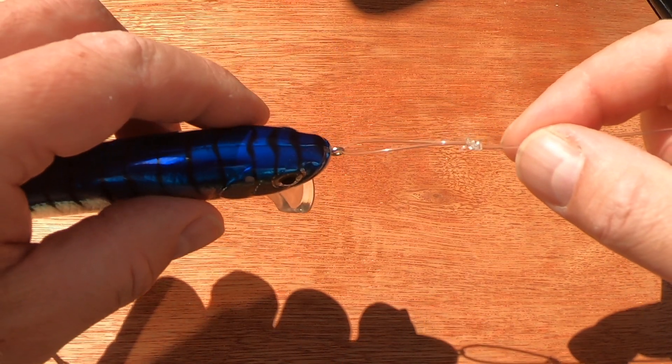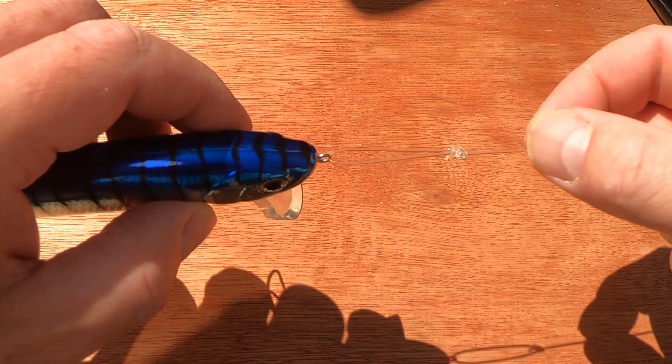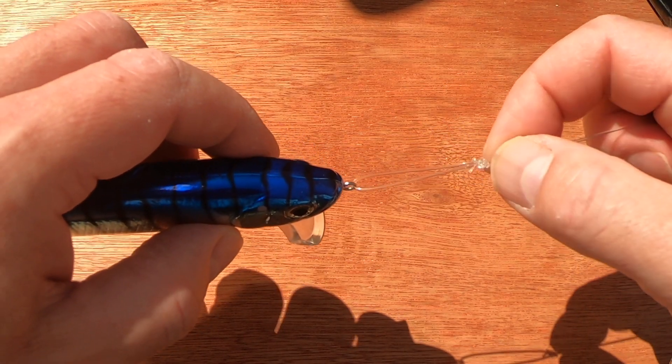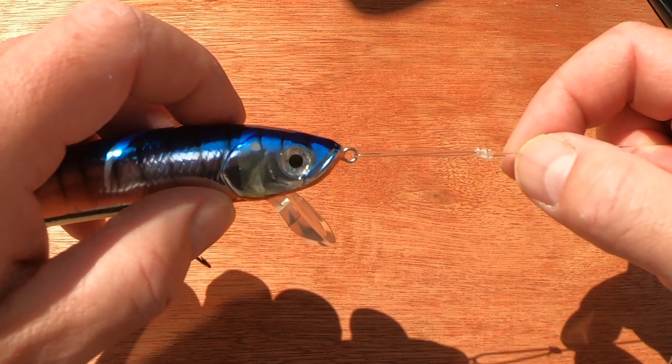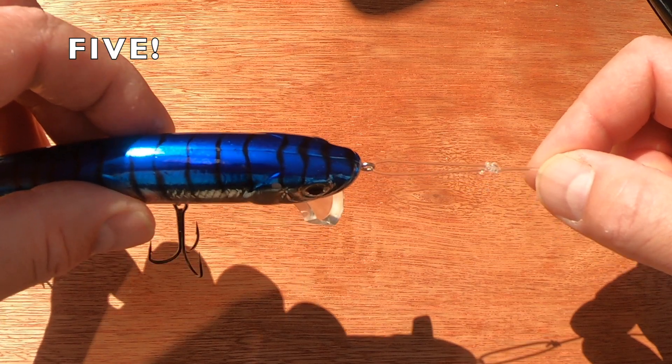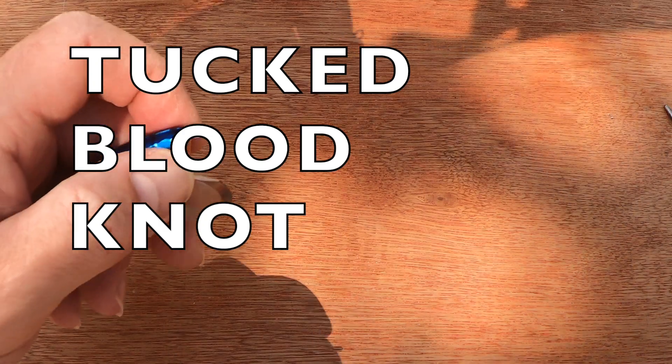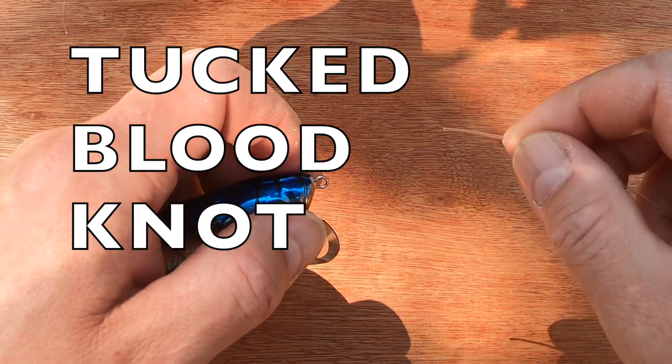It creates a fixed loop knot. So if you just remember that, for thicker lines three twists around the main line, for thinner lines four. You can't go wrong, and you got yourself a good little another way of attaching a lure other than a clip.